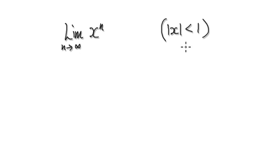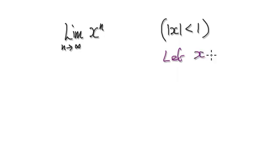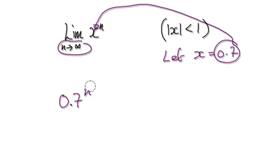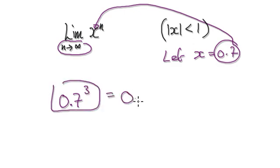So if you select x equals 0.7, where the absolute value of x is less than 1, then in this case you have 0.7 to the power of n. As n tends to infinity, let's just look at the first few terms. It's really the same as multiplying 0.7 by itself repeatedly.